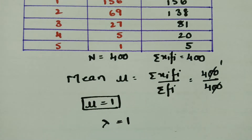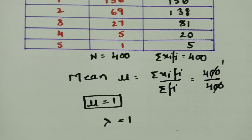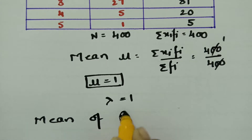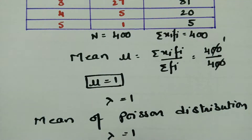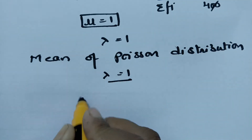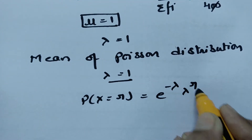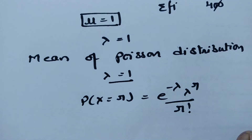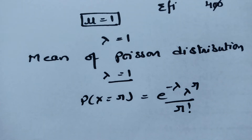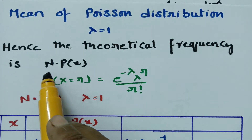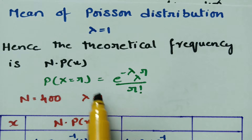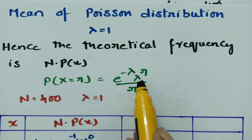We represent the mean with lambda, so lambda is equal to 1. Next we have to find the theoretical frequencies. The mean of the Poisson distribution is lambda equal to 1. According to the Poisson distribution formula, the probability of X equal to r is e to the power minus lambda, times lambda to the power r, divided by r factorial.